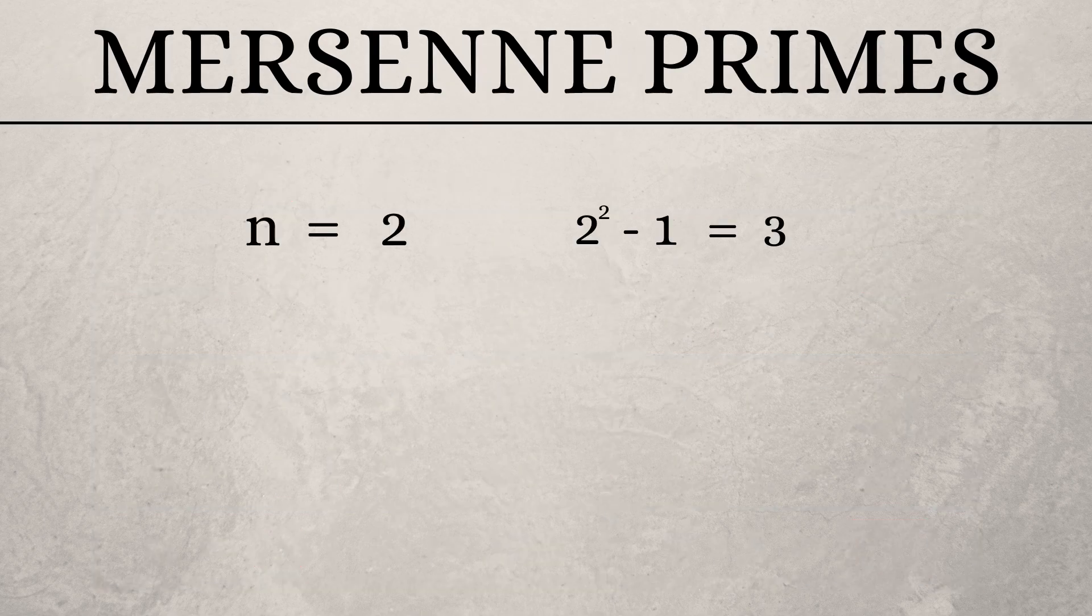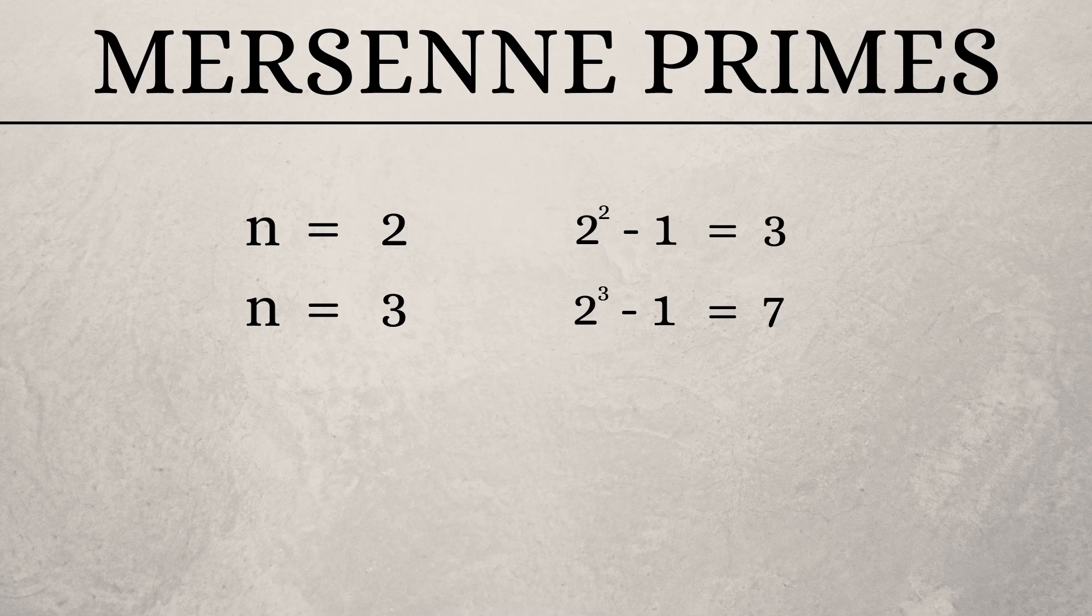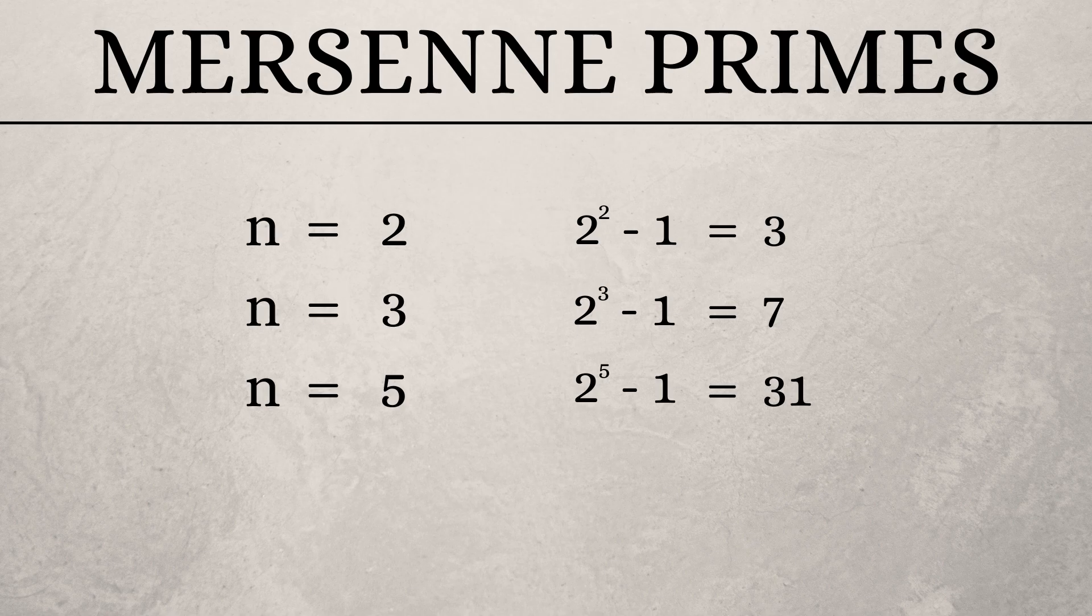When n is equal to 2, the Mersenne prime is 3. When n is equal to 3, the Mersenne prime is 7. When n is equal to 5, the Mersenne prime is 31. And when n is equal to 7, the Mersenne prime is 127.